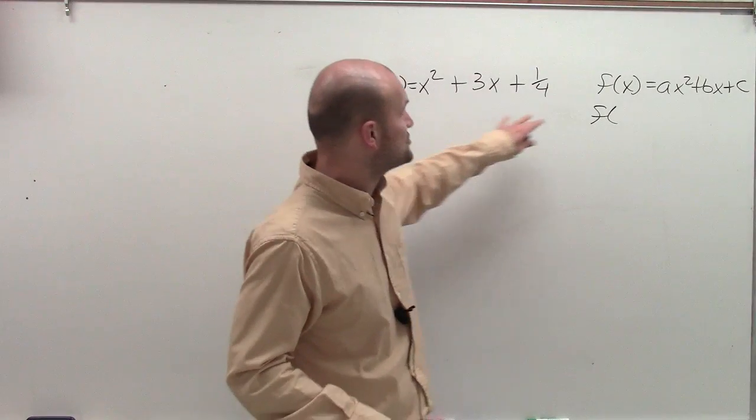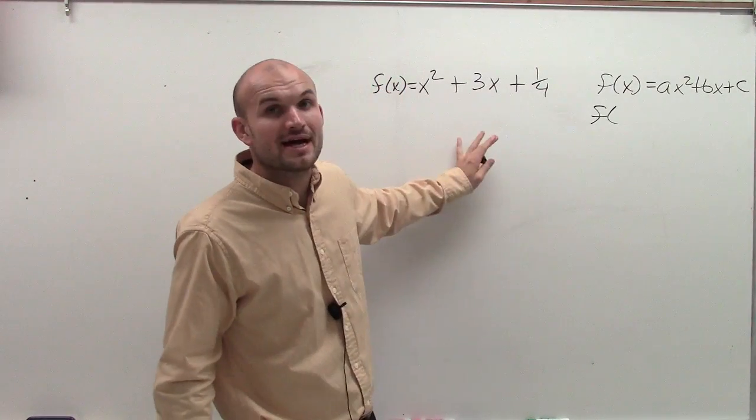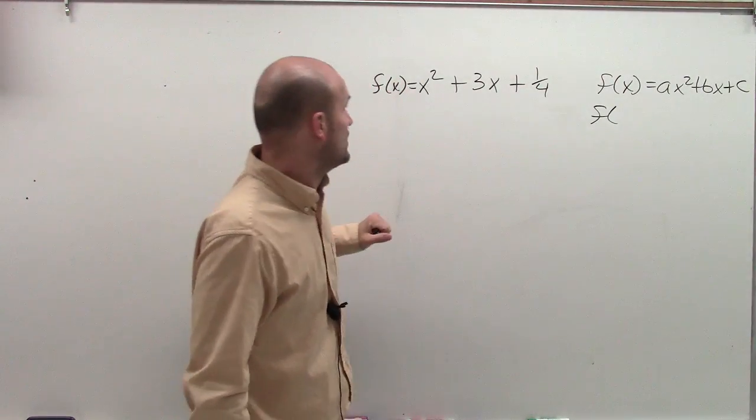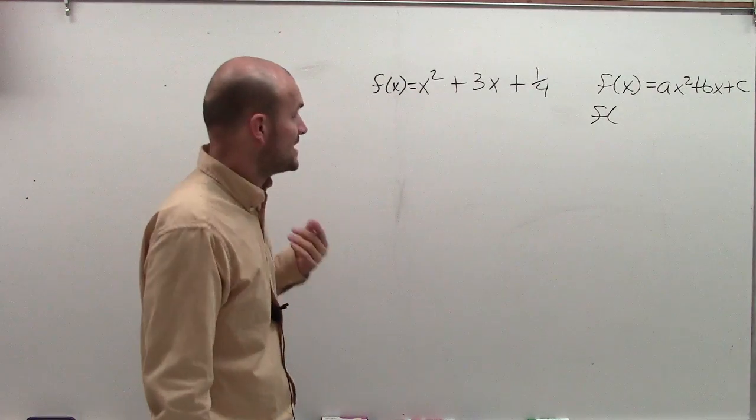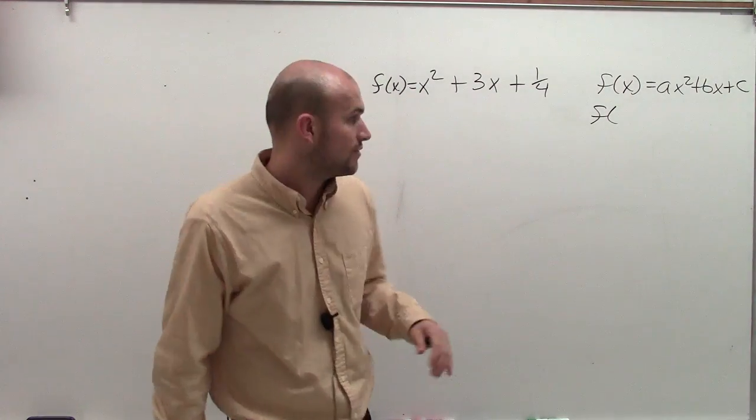Welcome. What I want to do is show you how to find the vertex and the x-intercepts of this function f of x equals x squared plus 3x plus 1 fourth.